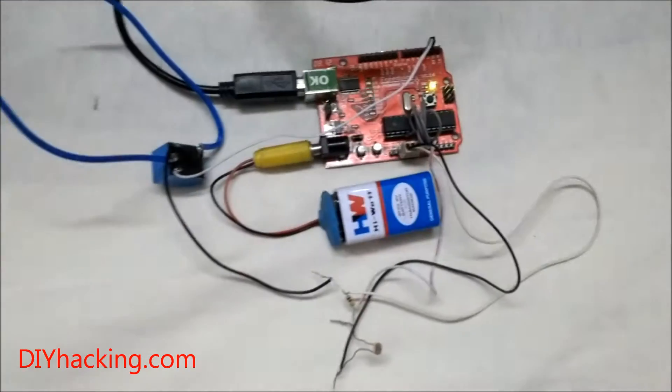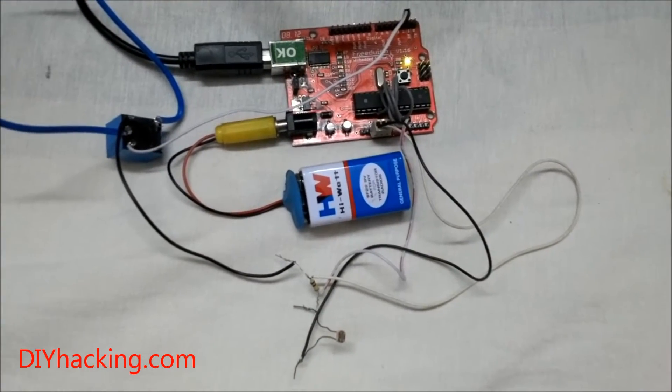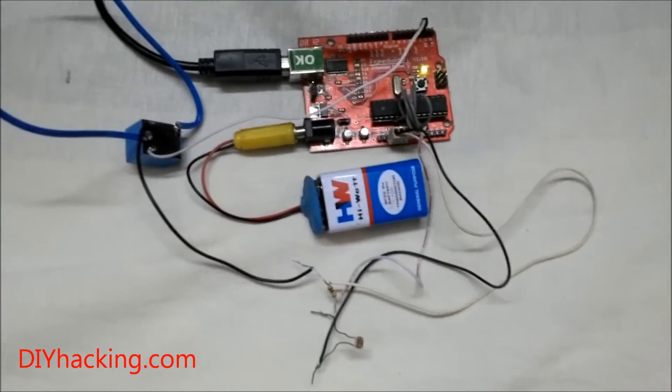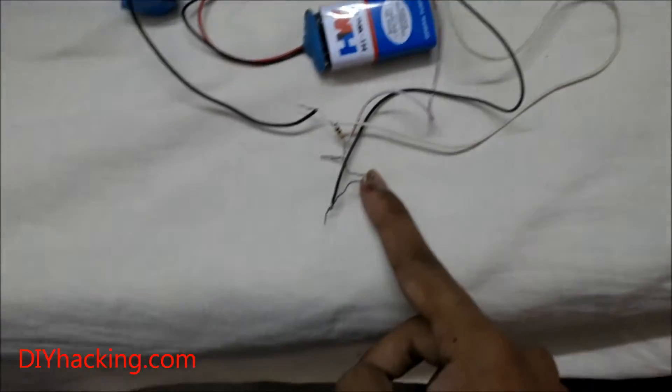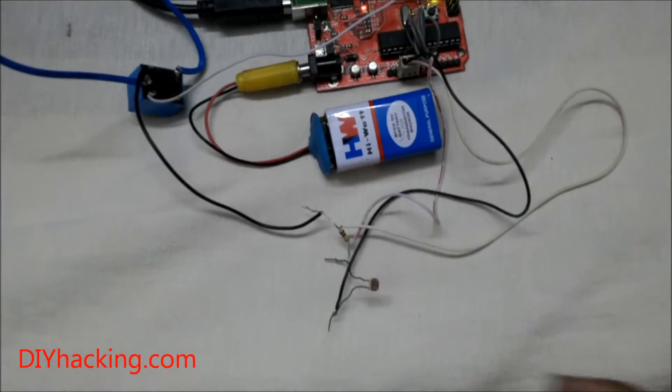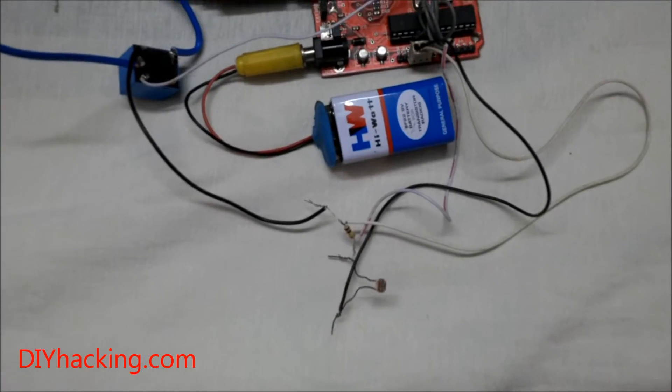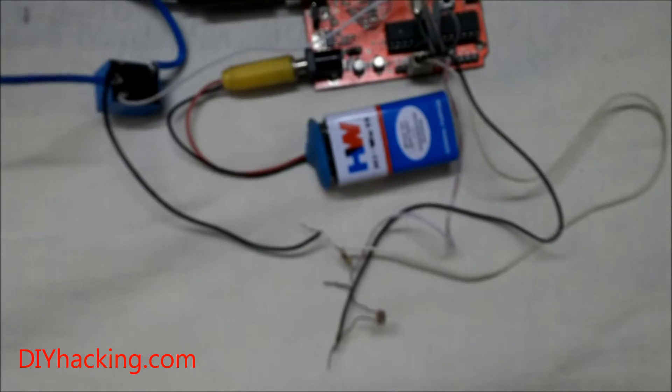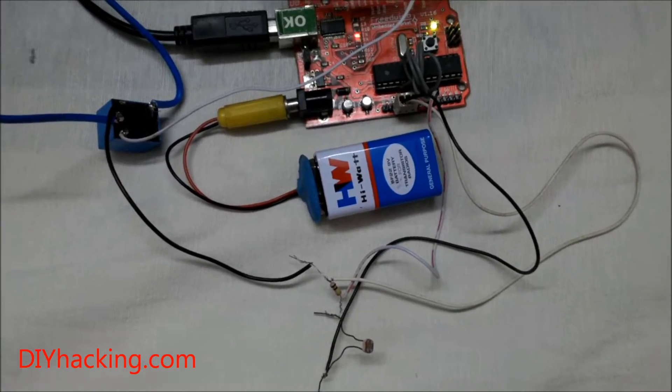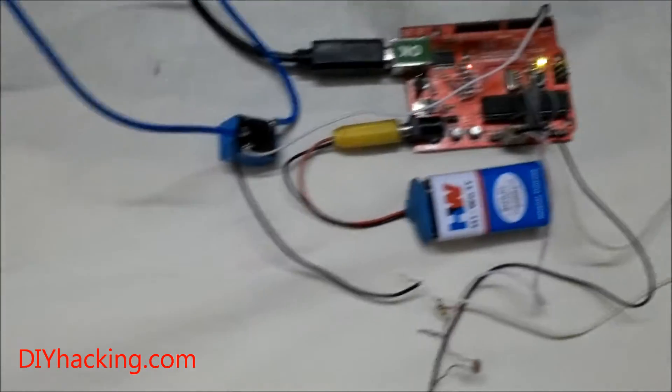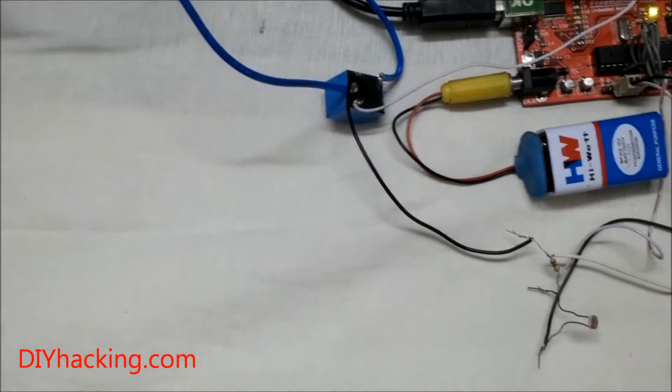The components used in this project are: an LDR, a light dependent resistor to sense the intensity of light, which is grounded by a 100k resistor to the Arduino. The Arduino is powered using a 9 volt battery and it's also connected to a relay.